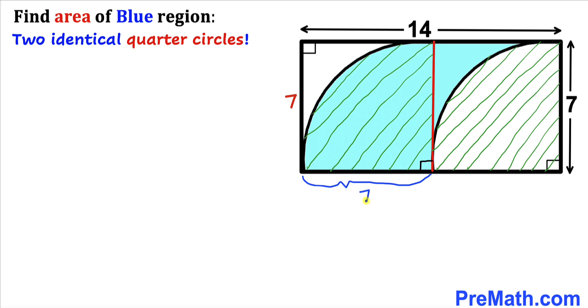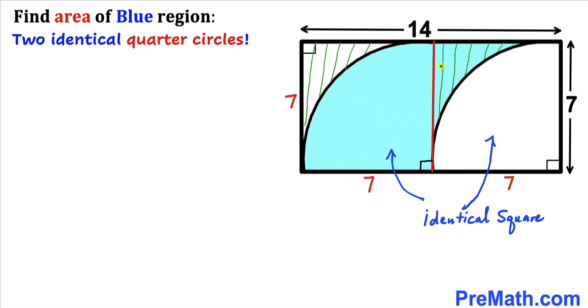So this has got to be 7 units as well. Now we can see that this square and this square are identical since their dimensions are 7 units and likewise over here 7 units as well. Moreover, we know that these quarter circles are identical as well. So therefore we conclude that this remaining region is going to be identical as well.